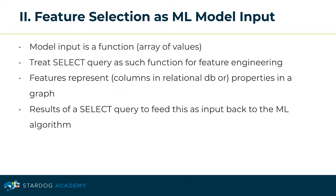The second step in our model development process is to select features as input for our machine learning model. We should consider model input as a function that gets an array of values as input. In Stardog, we treat SPARQL SELECT query statements as such functions for the feature selection and engineering process. Features represent columns in a relational database or properties in a graph database, and the results of the SELECT query are used to feed input back to the machine learning algorithm.